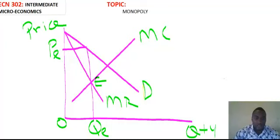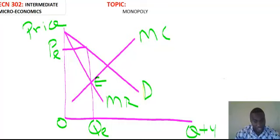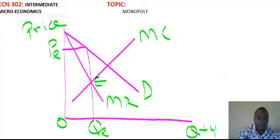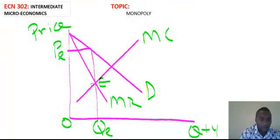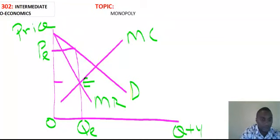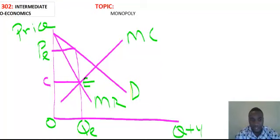From this graph, at point E, MC and MR equate. We trace these points to the demand curve to get our PE — the equilibrium price — and our QE — the equilibrium quantity at point E. The monopoly sets price at PE and output at QE. The profit of the monopolist is given as the area between PE and C, where C is assumed to be the cost, and QE is the output.